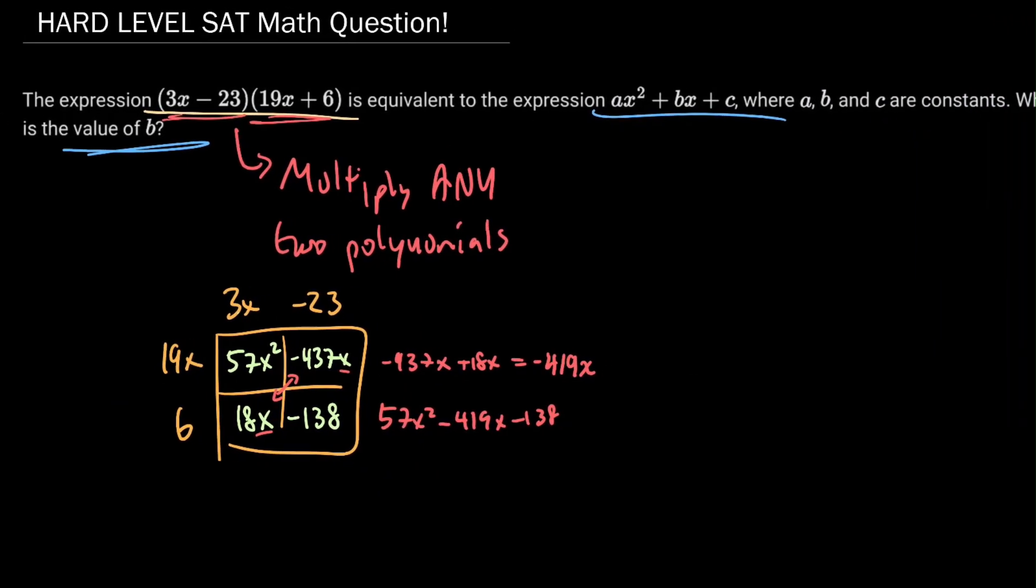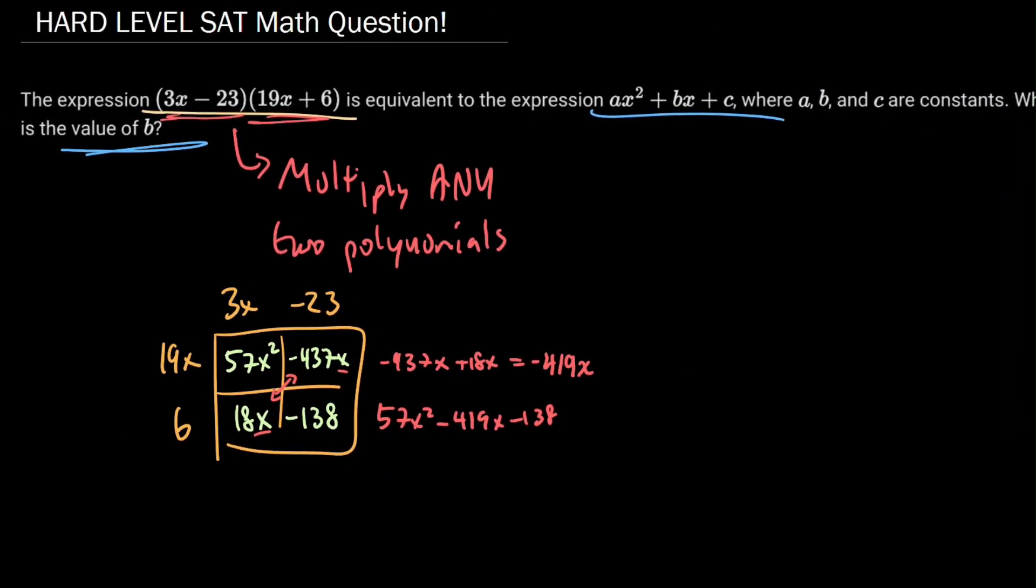Let's go back and take a look at our problem again. What is the value of b? Well, we see the value of b, the coefficient of x in both of these, is going to be -419. -419 is equal, therefore, to b, and that's our answer.